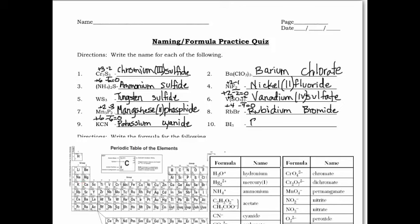Next: boron — leave a space — iodide. It sounds funny, but that's correct. Boron only has one positive oxidation number, so we're done. That's it for the naming part of the quiz.